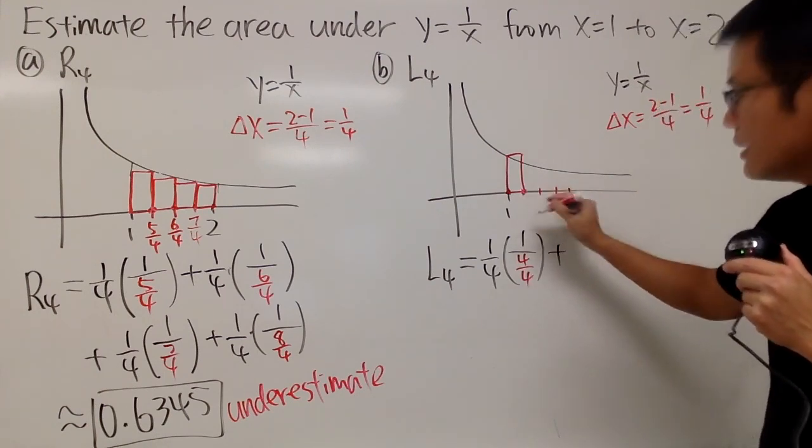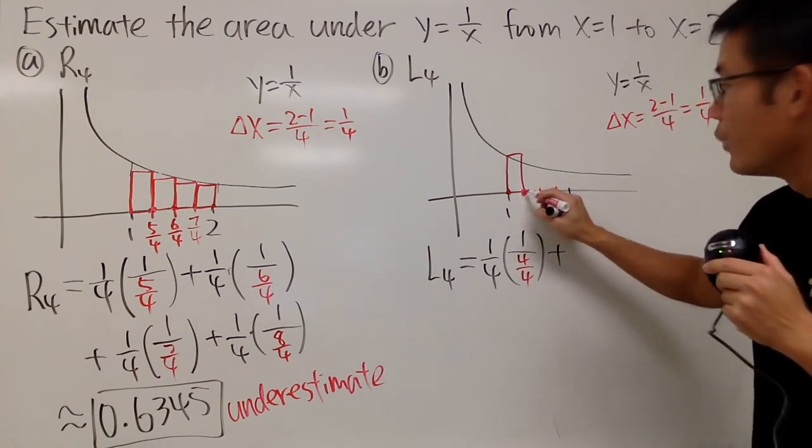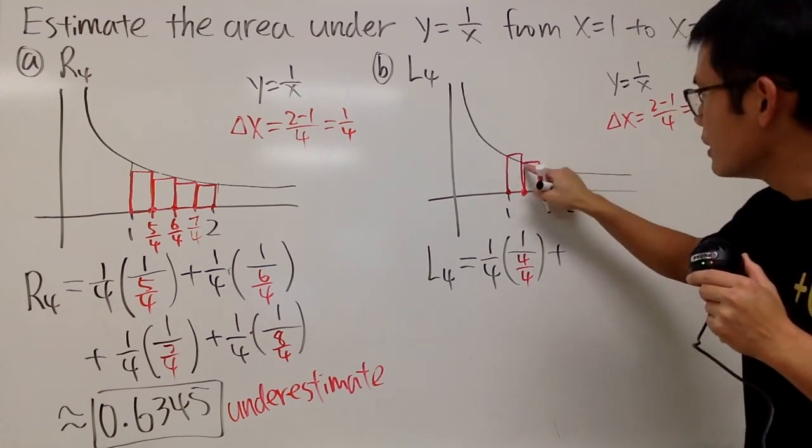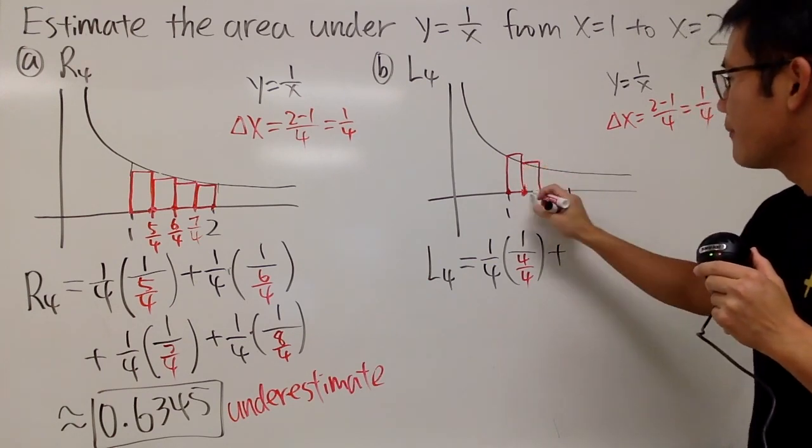So next, we start from this. We start from this. We go up, hit the curve, and then we draw the rectangle like that.